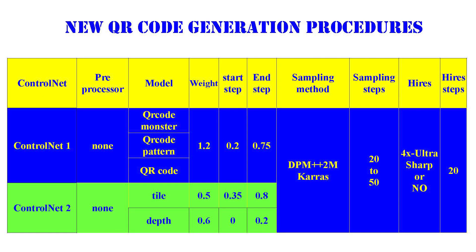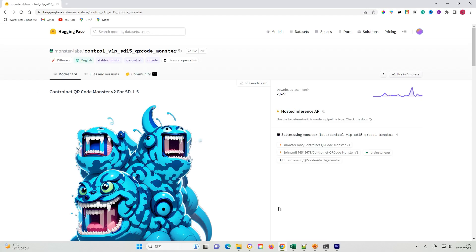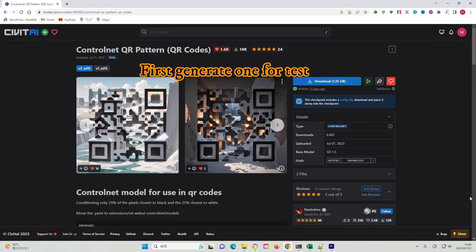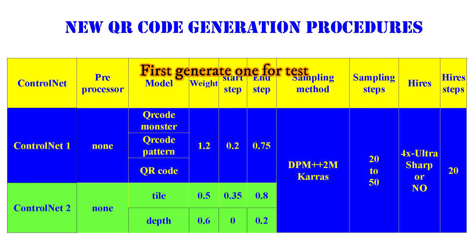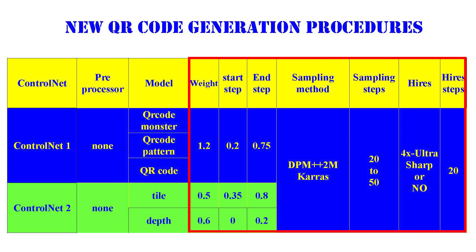Based on this investigation, I now propose a modified method for generating QR codes. It involves using two ControlNet models as the base. The first model selected is a specially trained ControlNet model, of which three models are available, all capable of generating good QR code images. Another model is selected as the second supporting model — in this case, the Tile model is used for testing purposes. The parameters I frequently use are listed here. Let's try some of them.